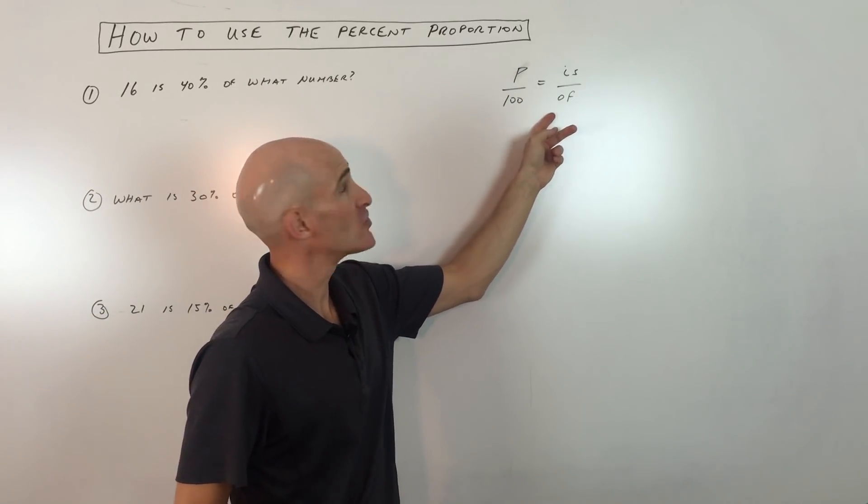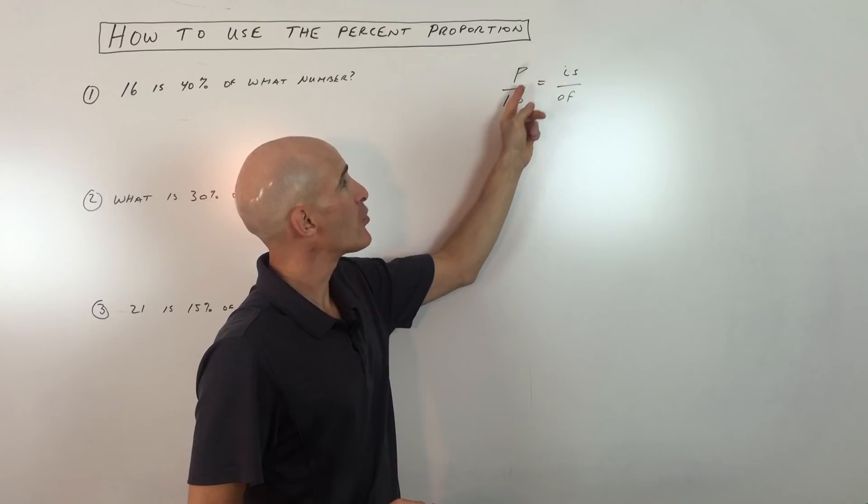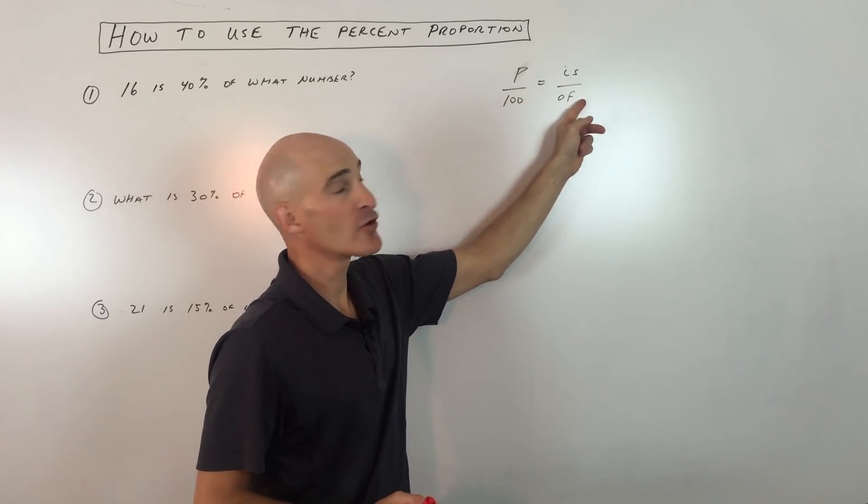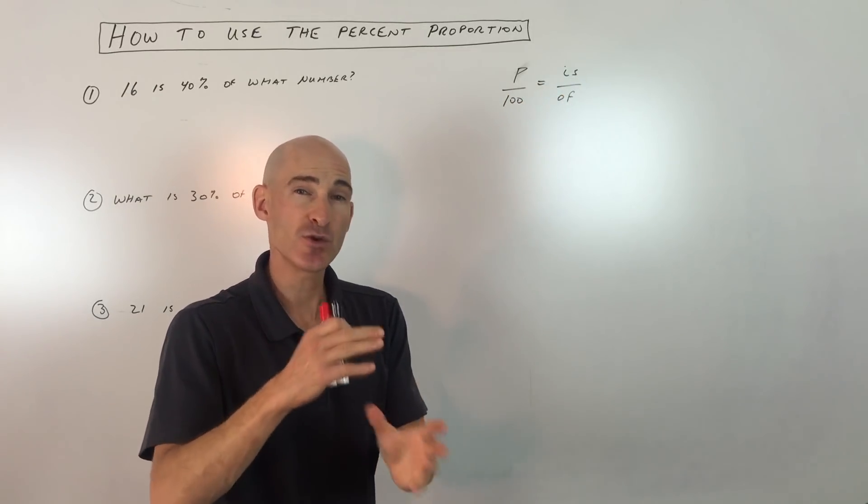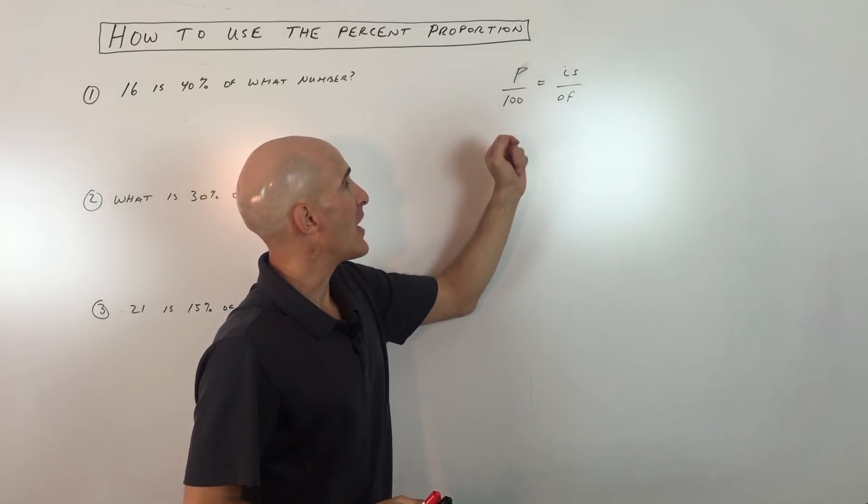First, let's talk about the percent proportion. Basically, a proportion is a ratio that's equal to another ratio. And a ratio is just a fraction where you're comparing two quantities.